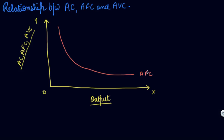We have seen that your average variable cost is decreasing. At some point it is constant, and then it starts increasing. This is your average variable cost curve.